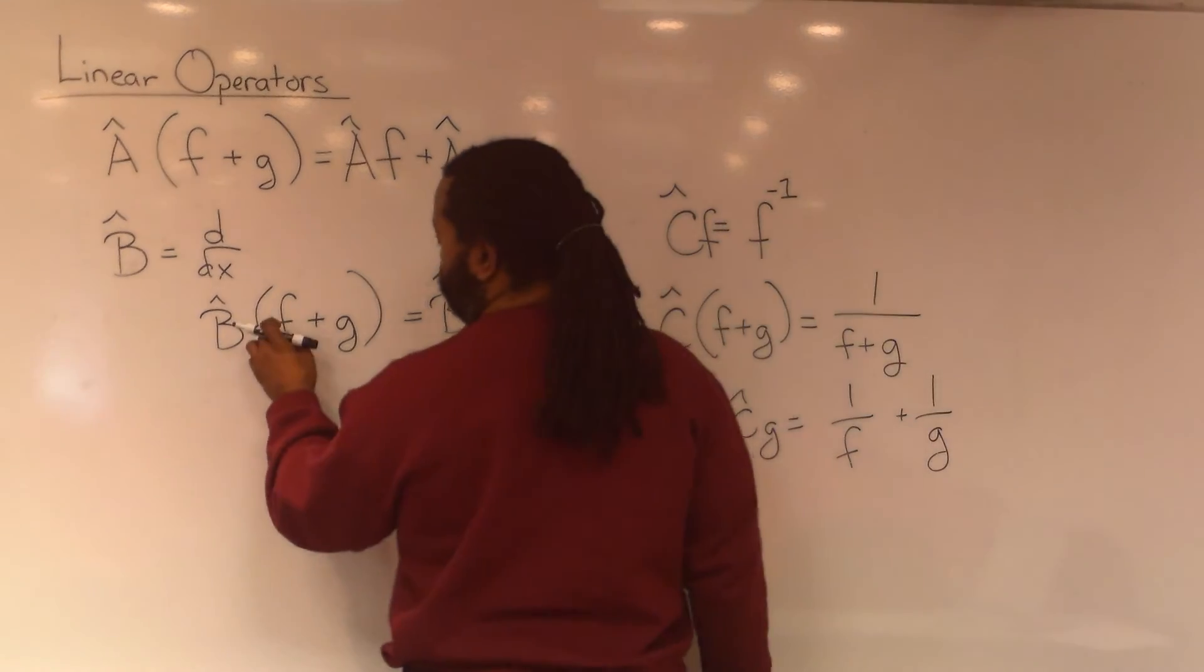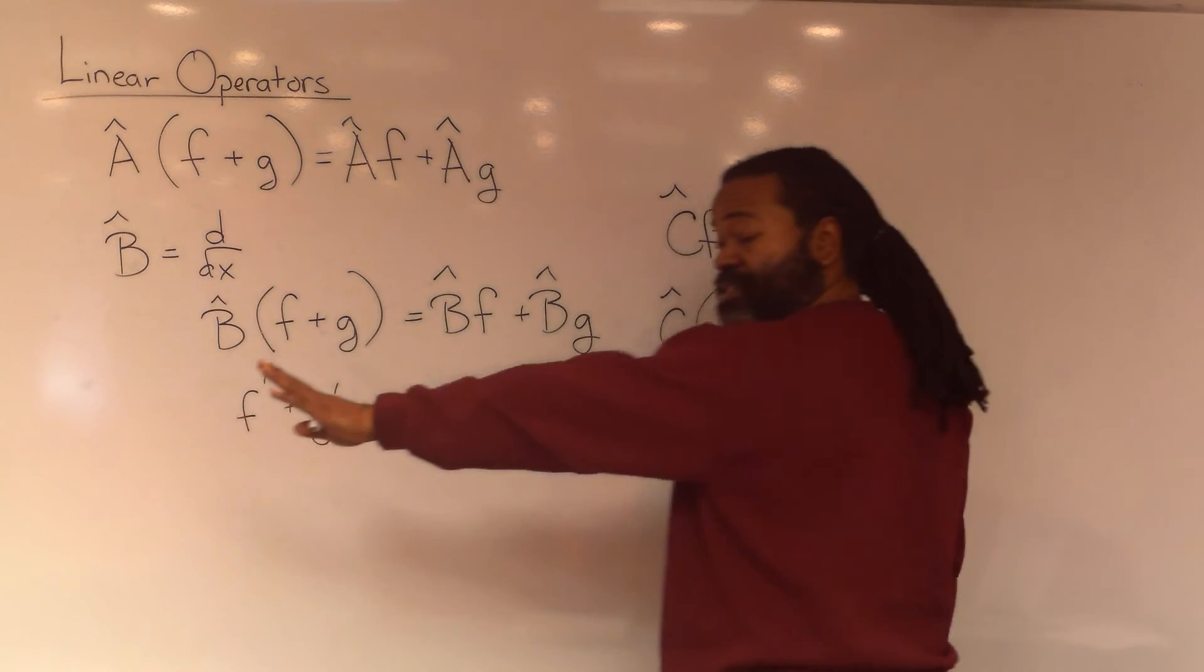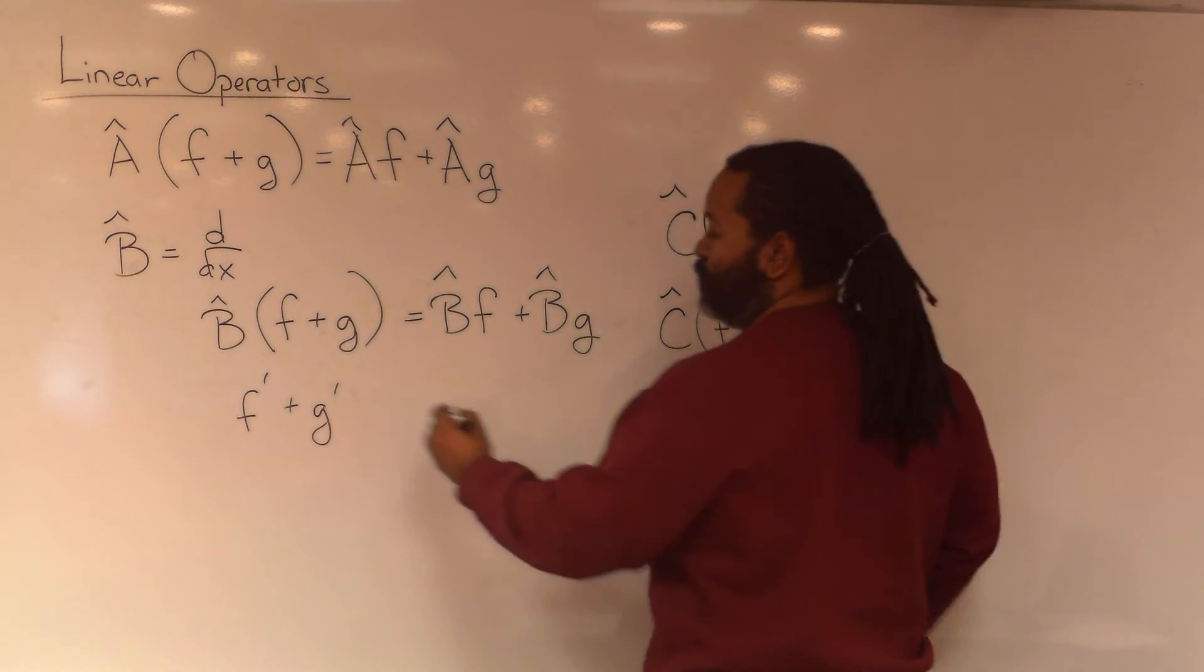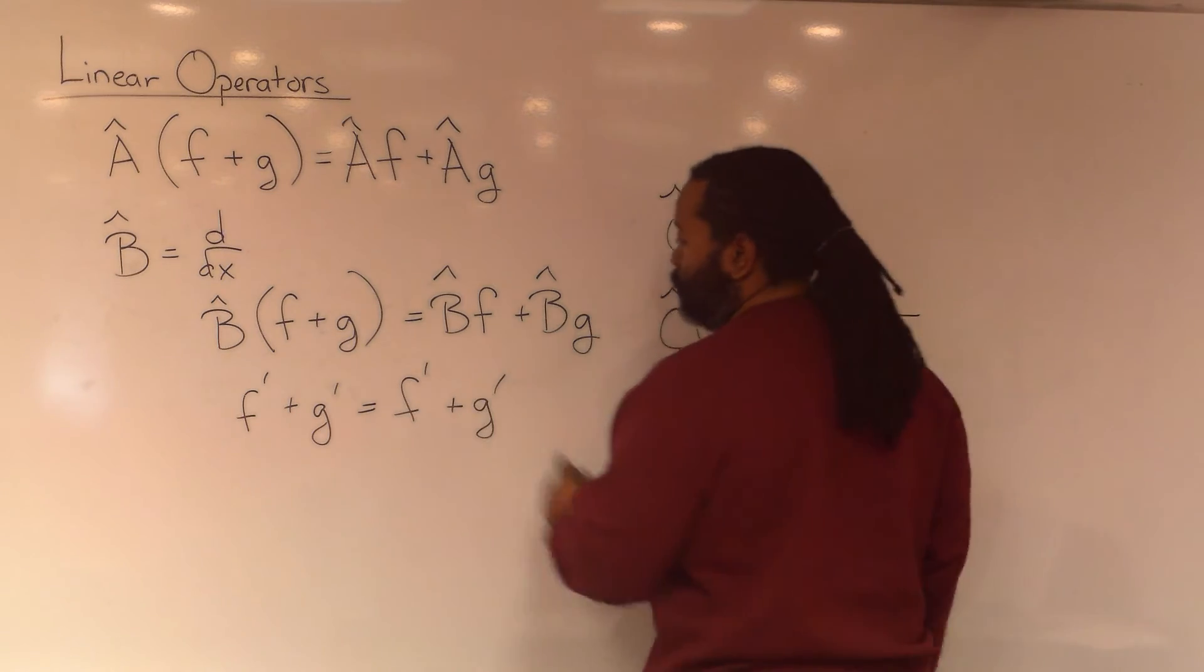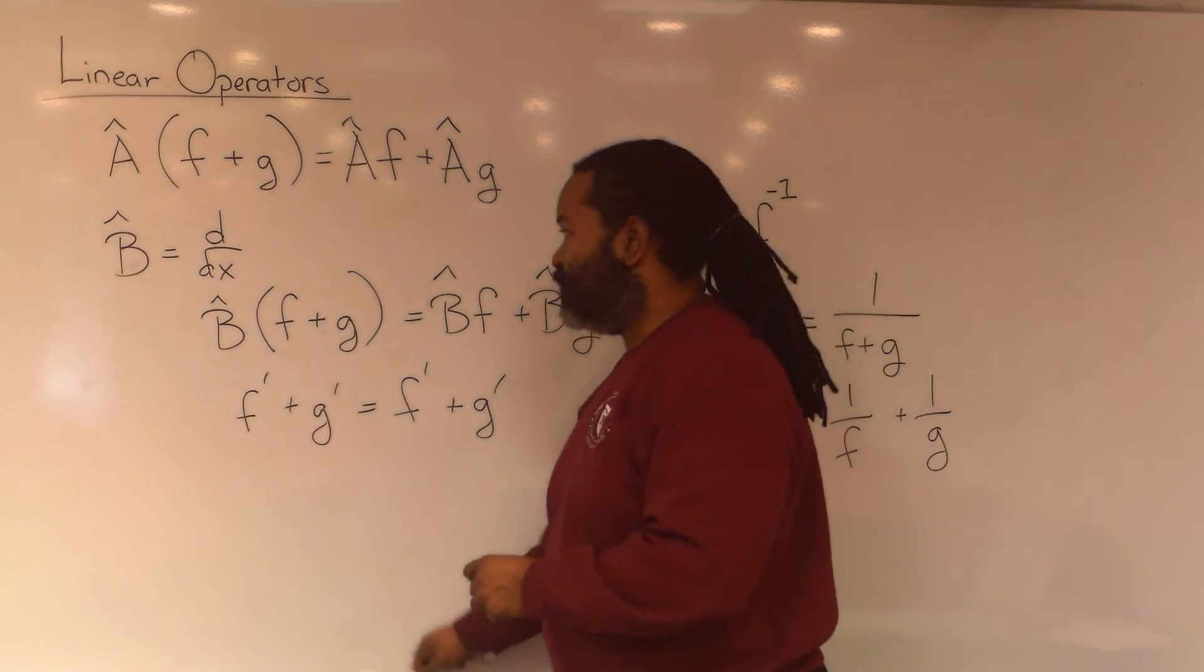Unlike this case, where all we're doing is getting f prime plus g prime on the left-hand side, we can say that B is a linear operator. Let's give that a green check.